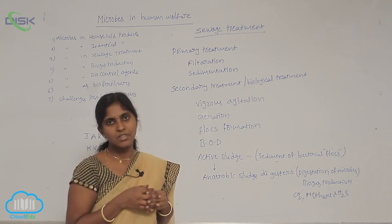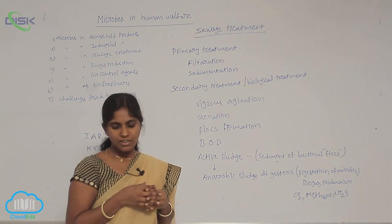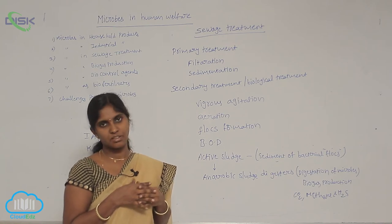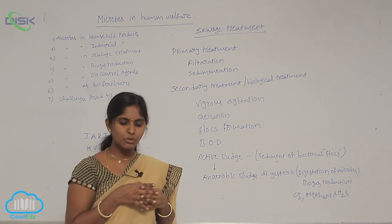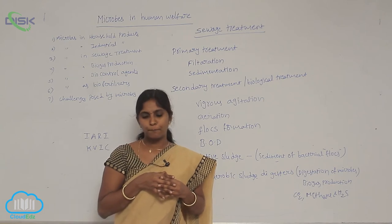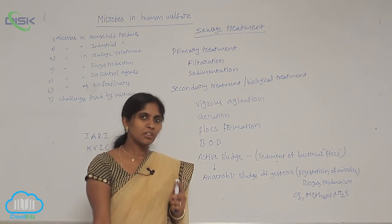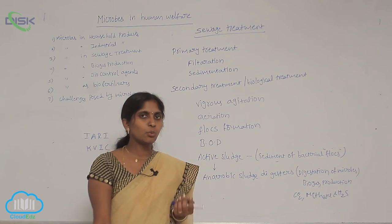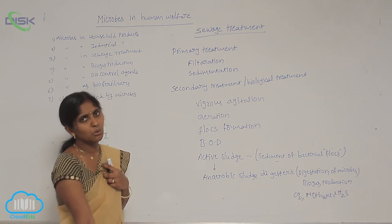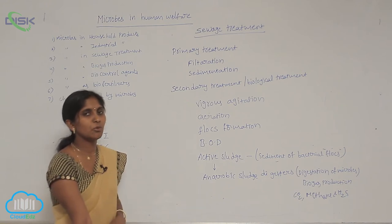To avoid that, sewage water must be treated before disposal into water bodies. For that, sewage water treatment plants are established to reduce sewage concentration. The treatment of wastewater is carried out in two ways: one is primary treatment and another is secondary treatment. Primary treatment involves the physical removal of solid material and particles.